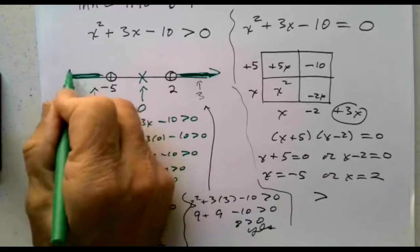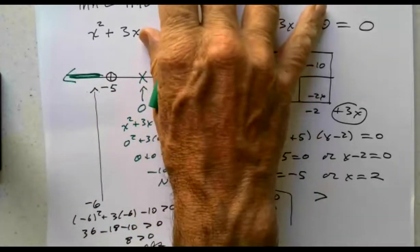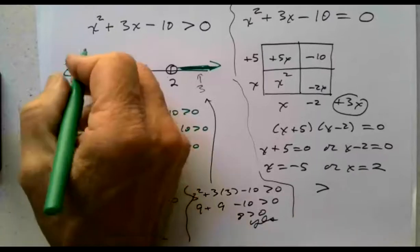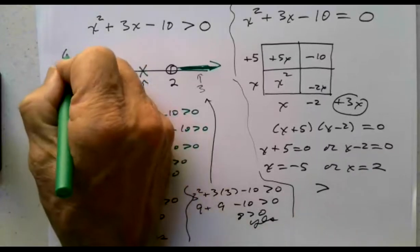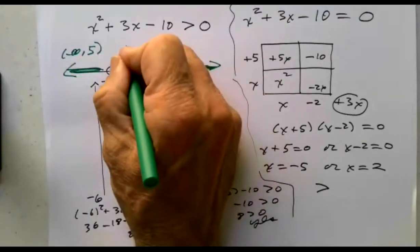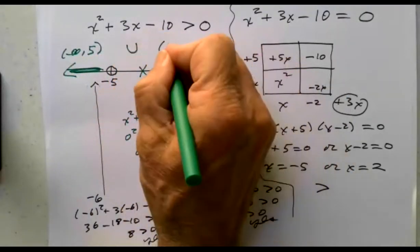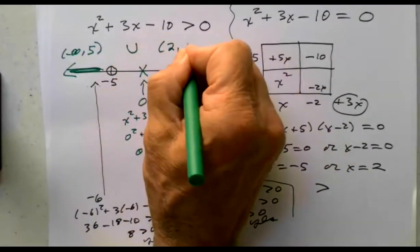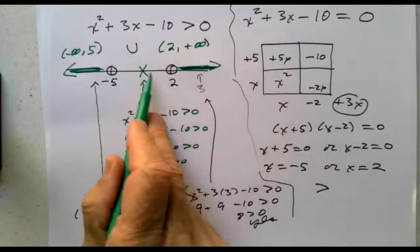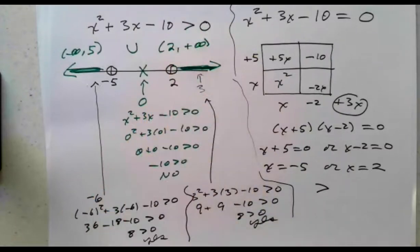Looking at this, we have two disjoint intervals. From negative infinity to negative 5, union from 2 to infinity. Notice the round brackets. Why round brackets? Because of the strictly greater than sign, which requires open circles at the endpoints.